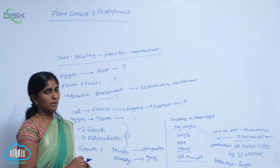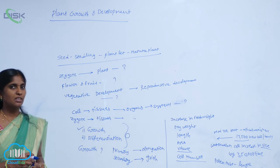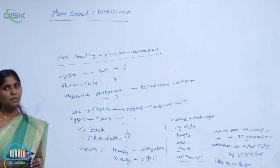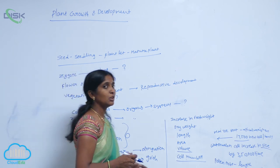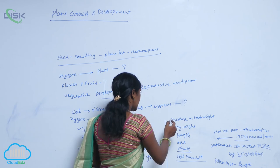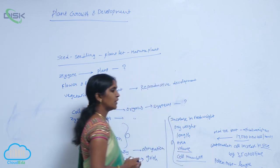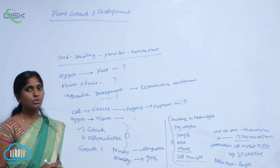And pollen tube length. So the length is increasing. The length is increased 2 millimeters to 3 millimeters. That is lengthwise. These parameters are used for the measuring of growth.